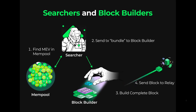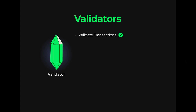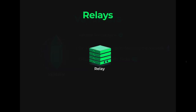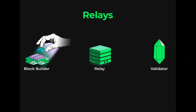Validators are digital entities staked on Ethereum that validate transactions, earn staking rewards, and propose blocks to the blockchain. A relay can be thought of as a middleman between block builders and validators to ensure that they don't cheat one another. Relays create a marketplace for validators to outsource block building and sell block space to the highest bidder. The block bundle with the highest tip to the validator gets chosen.